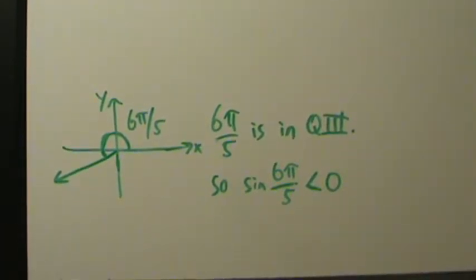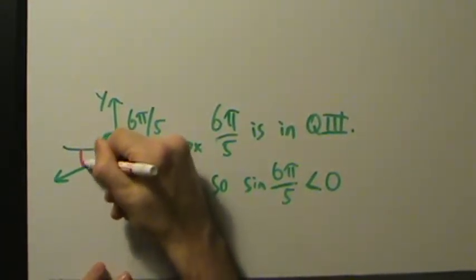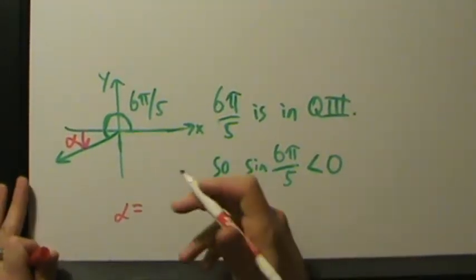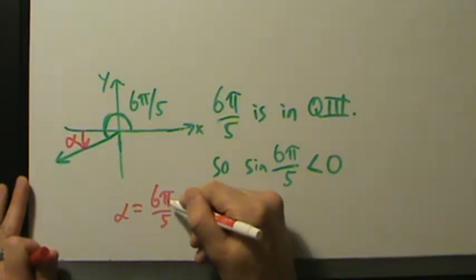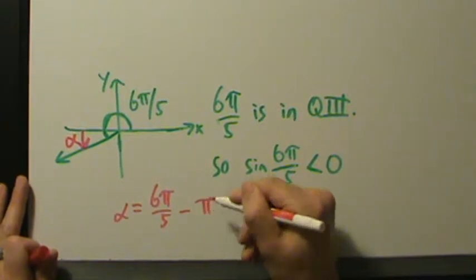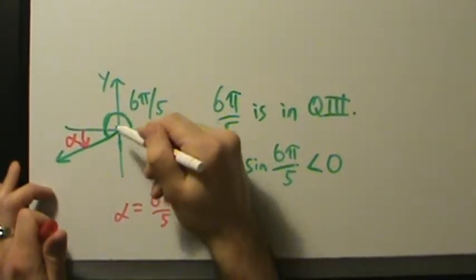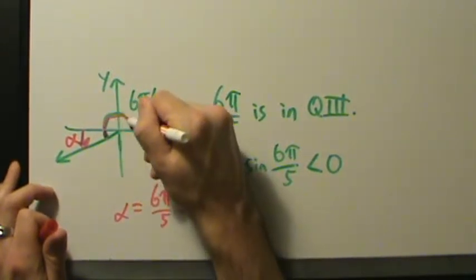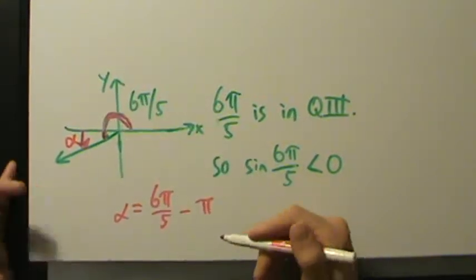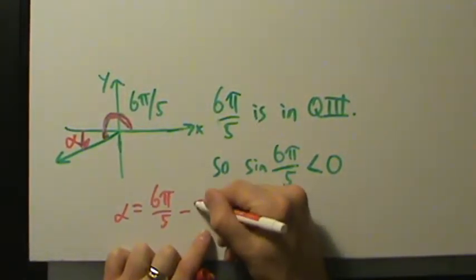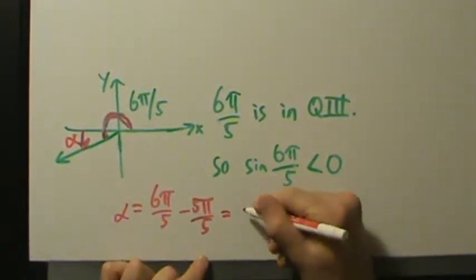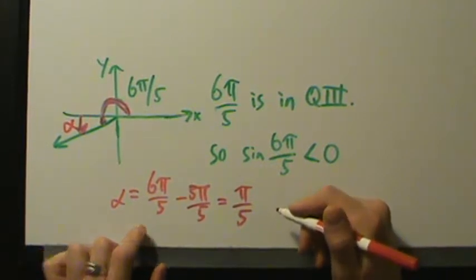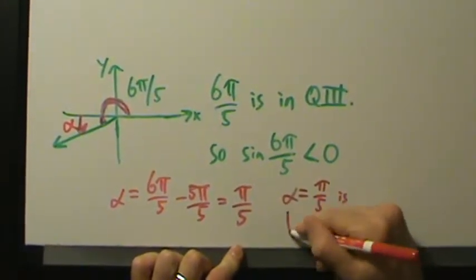Now let's find the actual reference angle. If we're in quadrant 3, the reference angle is this angle right here. We'll call that angle alpha. If you're in quadrant 3, you take the angle that you have — which is 6π over 5 — and subtract π. So 6π over 5 minus π: common denominator gives us 6π over 5 minus 5π over 5, which equals π over 5. So our reference angle alpha equals π over 5.